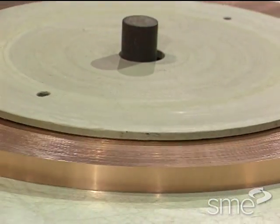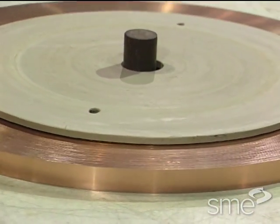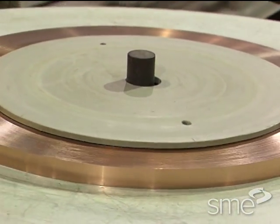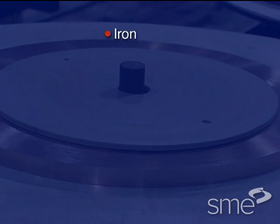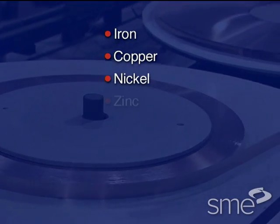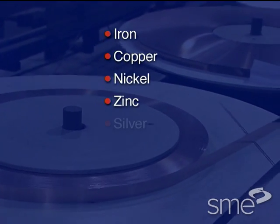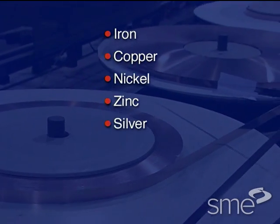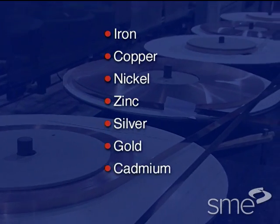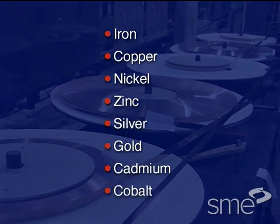Most metals can be electroplated, with the easiest being iron, copper, nickel, zinc, silver, gold, cadmium, and cobalt.